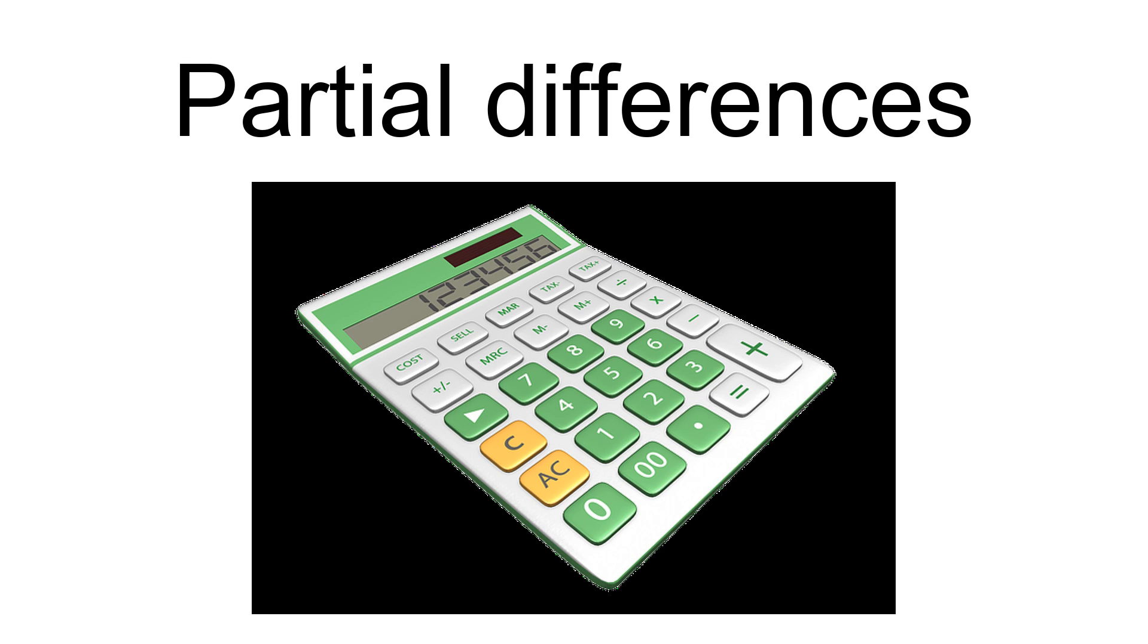The partial differences method is different from other vertical subtraction methods because no borrowing or carrying takes place. In their place, one places plus or minus signs depending on whether the minuend is greater or smaller than the subtrahend. The sum of the partial differences is the total difference.